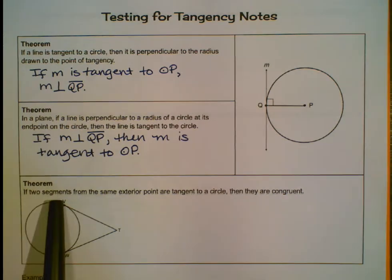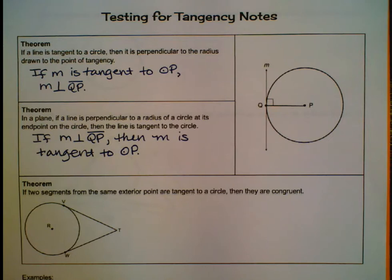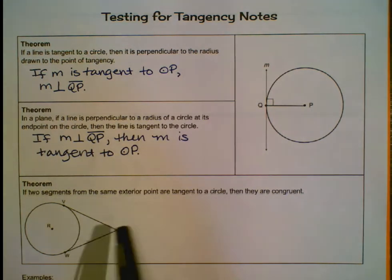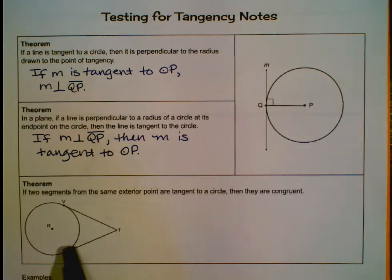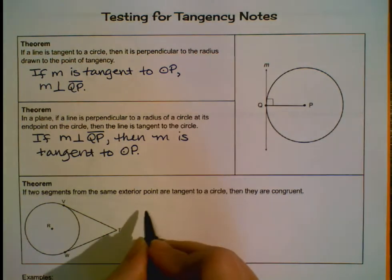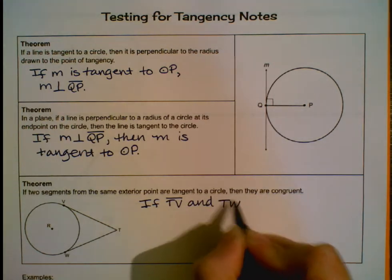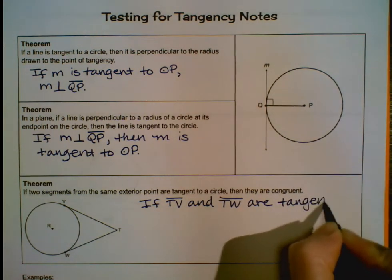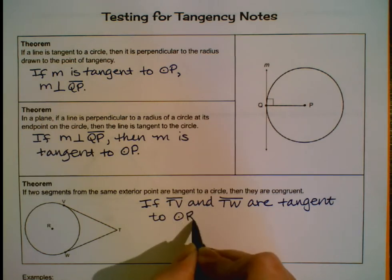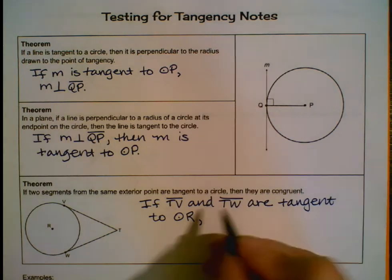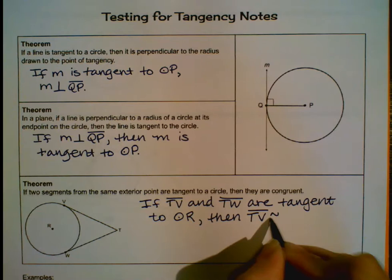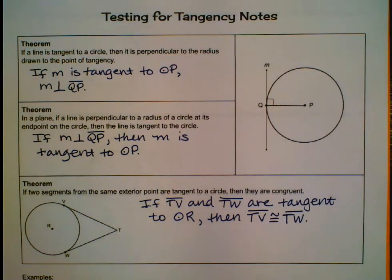Our final theorem for today: if two segments from the same exterior point are tangent to a circle, then they are congruent. Point T is outside the circle — it's exterior. We have two segments tangent to the circle, intersecting only at point V or point W. So if segment TV and segment TW are both tangent to circle R, then segment TV must be congruent to segment TW.